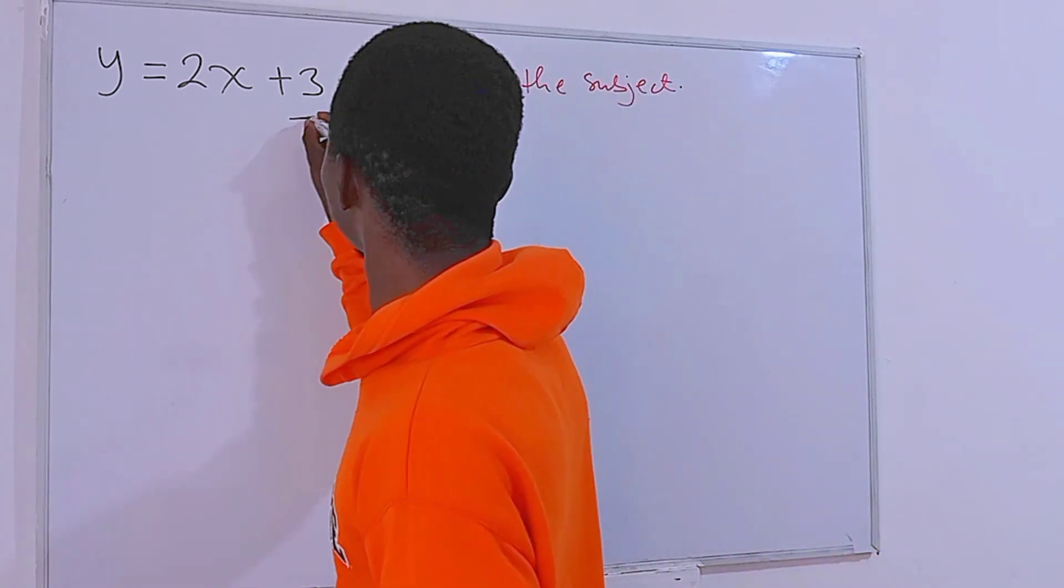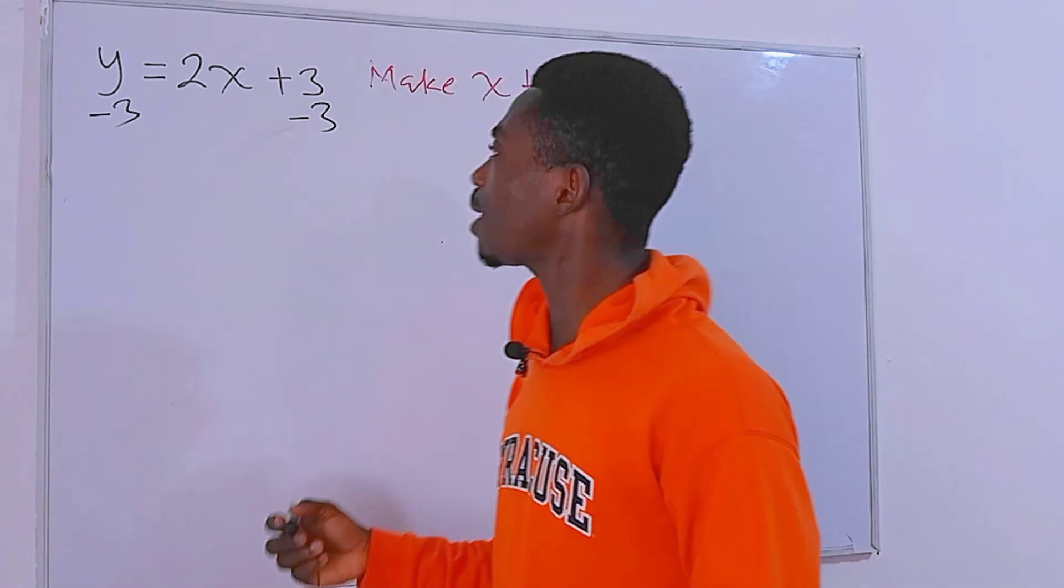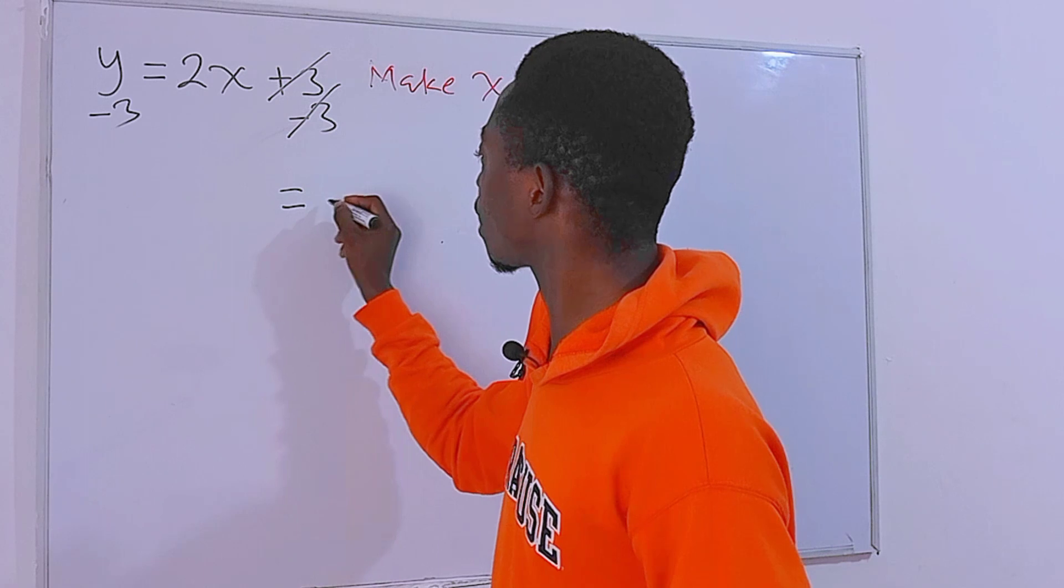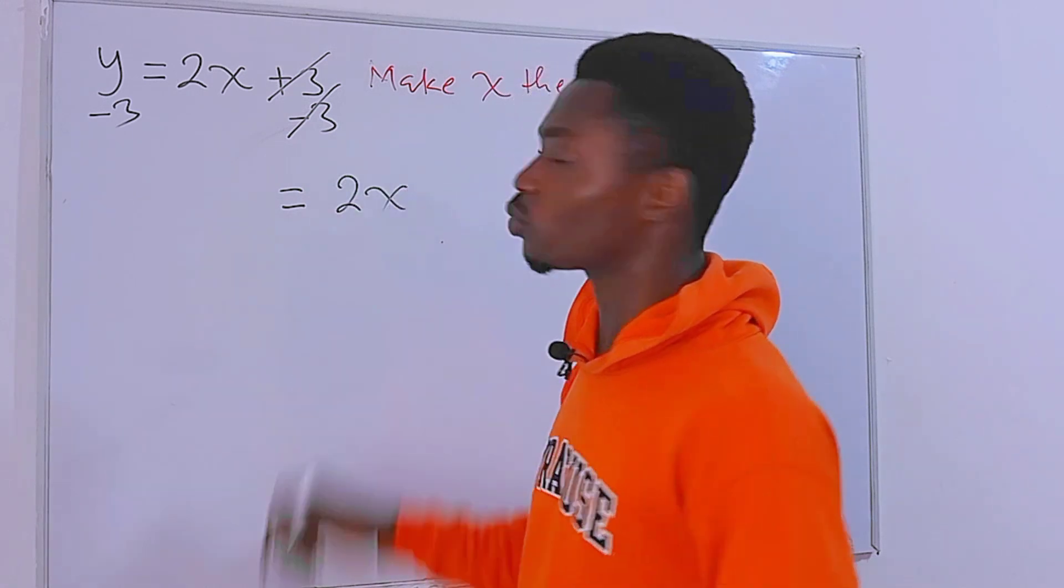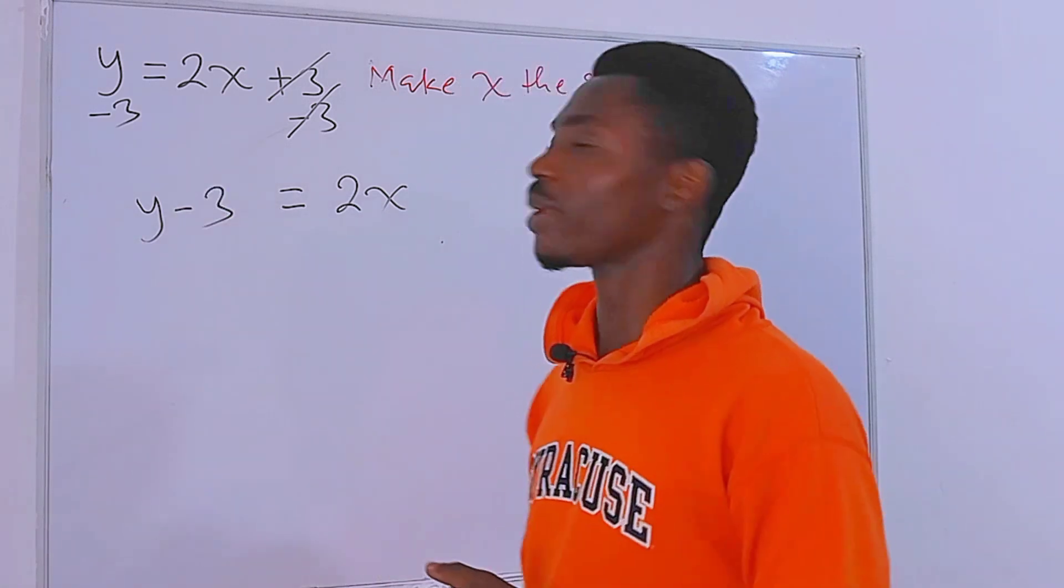First of all, I'm going to subtract 3 from each side of the equation. And the reason is that I just want this to cancel out so that on the right hand side we'll be left with just 2x. Then on the left now we'll have y minus 3.